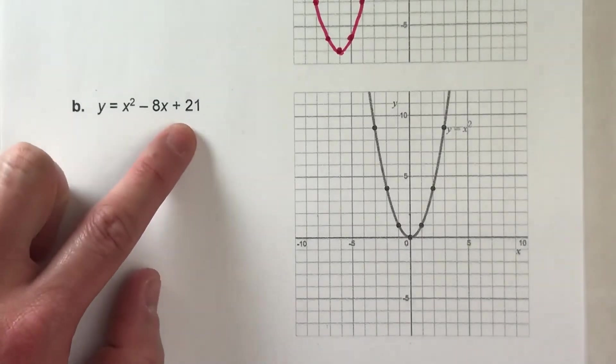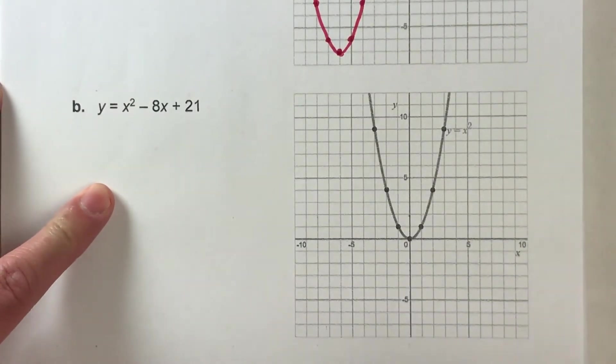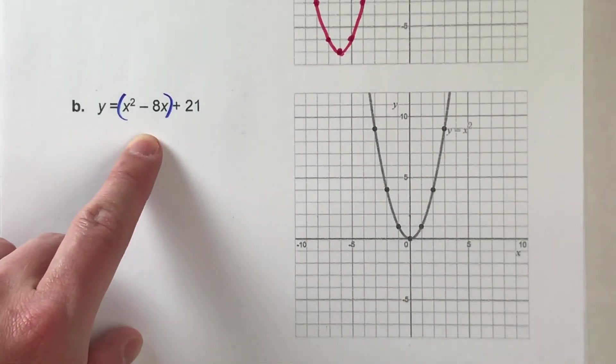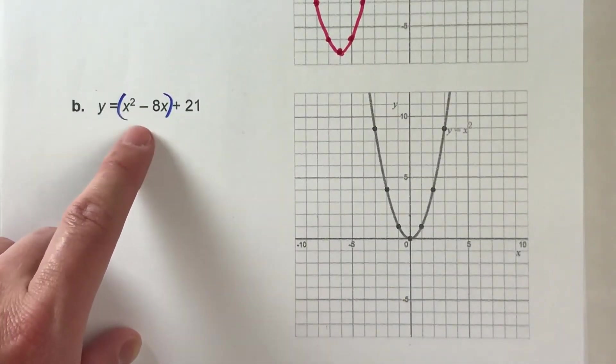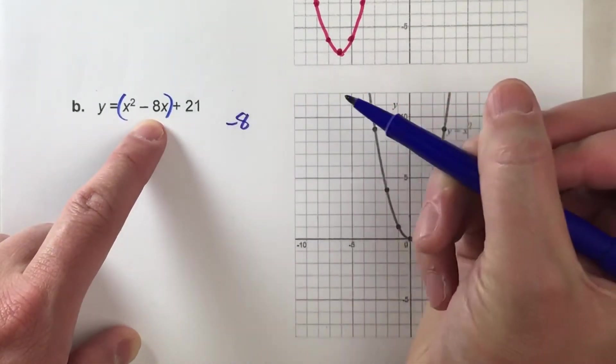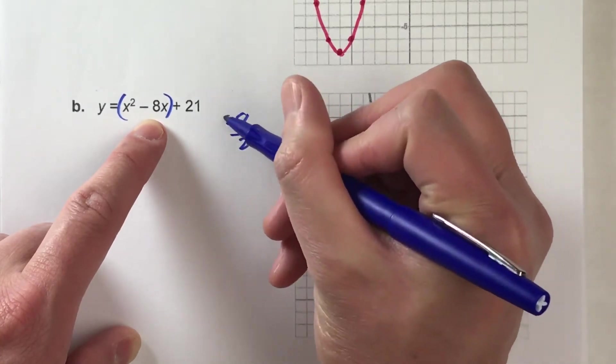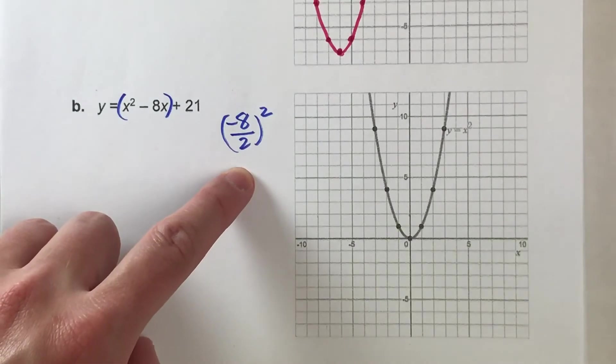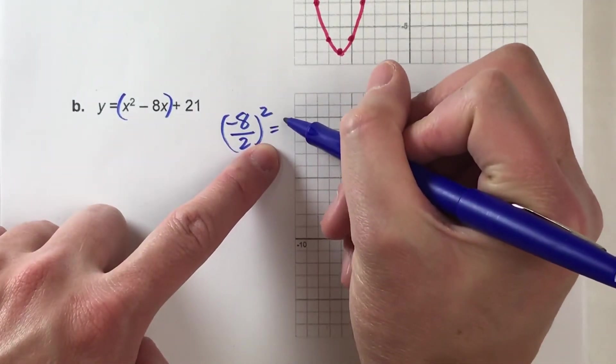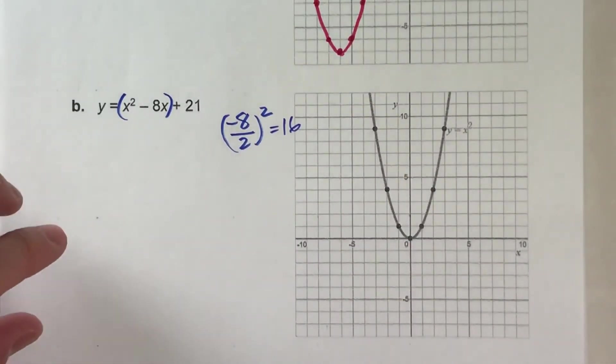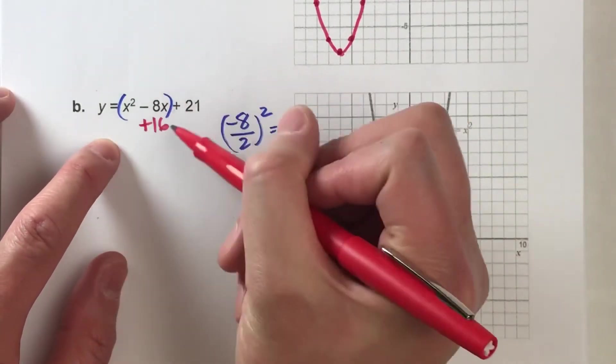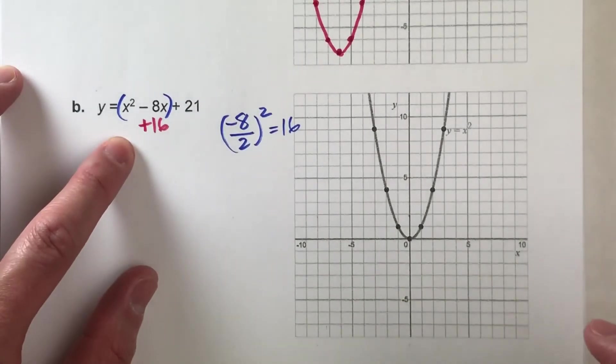Y equals x squared minus 8x plus 21. First step, I'm putting parentheses around the x squared and the minus 8x terms. Now, we need to complete the square. To complete the square, we take the number next to x, negative 8, and divide it by 2 and square it. Negative 8 divided by 2 is negative 4. Negative 4 squared is positive 16.